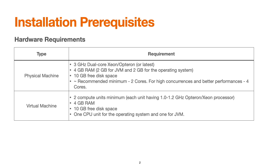For a physical machine, the minimal recommended requirement is a 4-core processor, 4GB RAM, and 10GB of hard disk space, with a minimum two-core CPU recommended. For a virtual machine, the same specs apply: two-core CPU, 4GB RAM, and 10GB hard disk space.